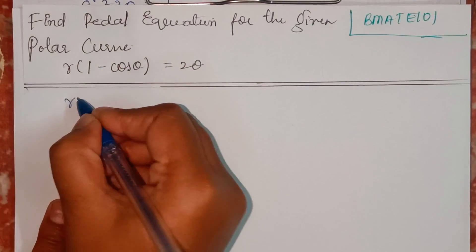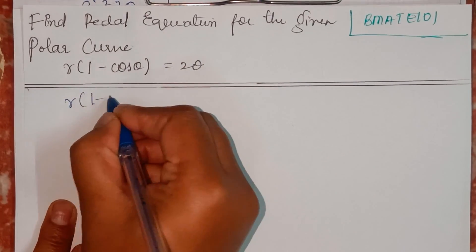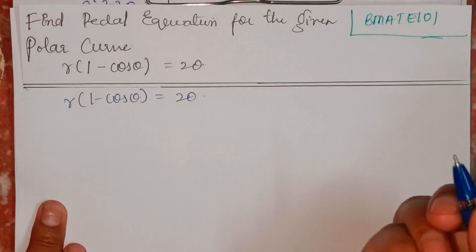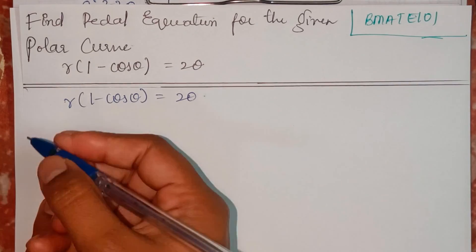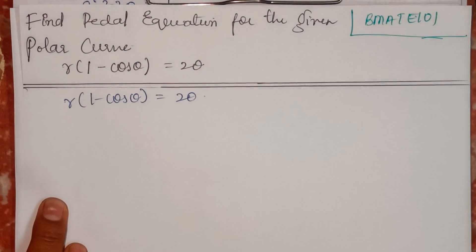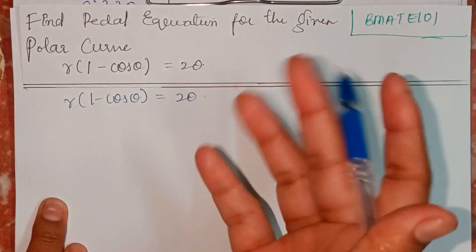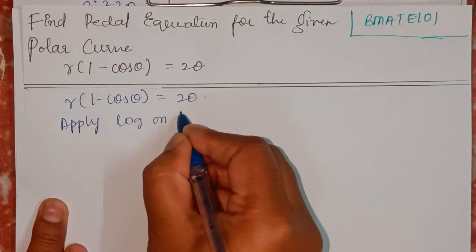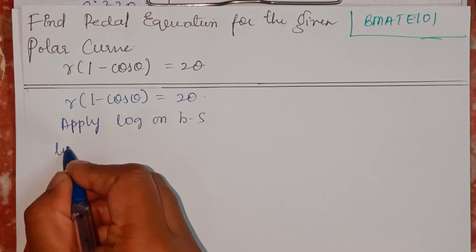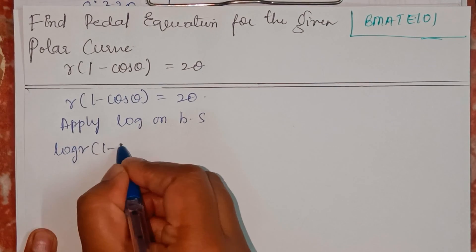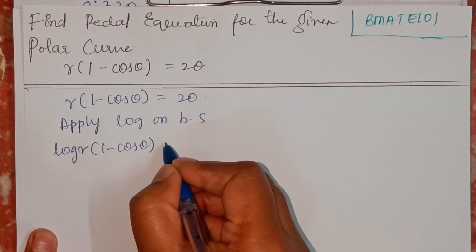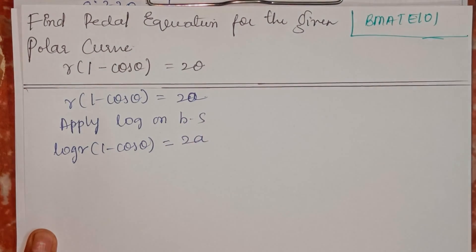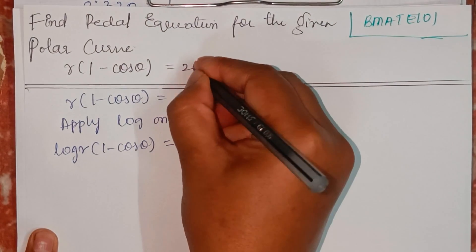I will rewrite the question: R into 1 minus cos theta is equals to 2a. The very first step — apply log on both sides. So it becomes log of R into (1 minus cos theta) equals log 2a. Note: the constant is 2a, not 2 theta.